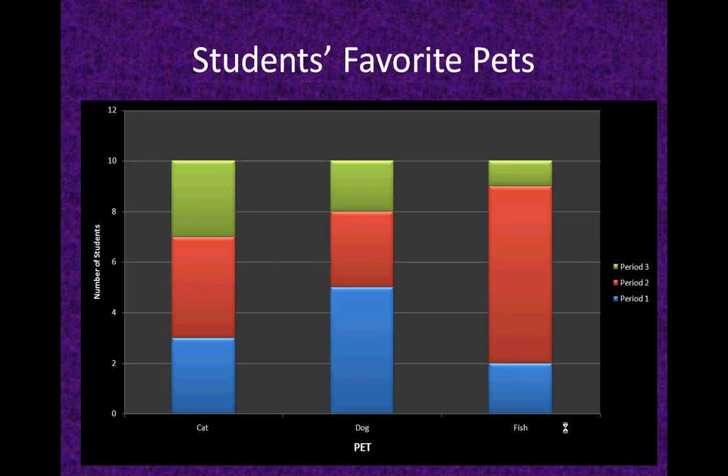The first thing you need to do with any graph is read the titles. In this case, they tell you who they asked — first, second, and third period math class — what the blue bars represent (period one), what the red bars represent (period two), and what the green bars represent (period three). They also tell you what they asked them about: what their favorite pet was.